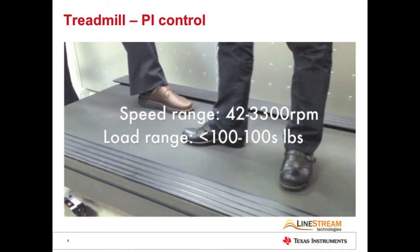Let's look at an example. This is a video of a treadmill application. Its speed range is 42 RPM to 3300 RPM, and the load can vary significantly from less than 100 pounds to several hundred pounds.